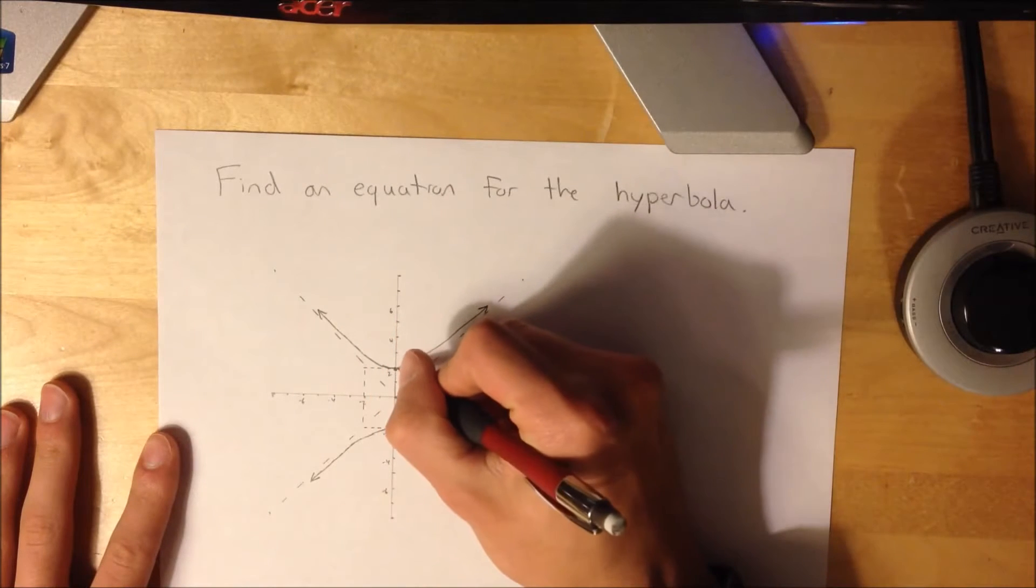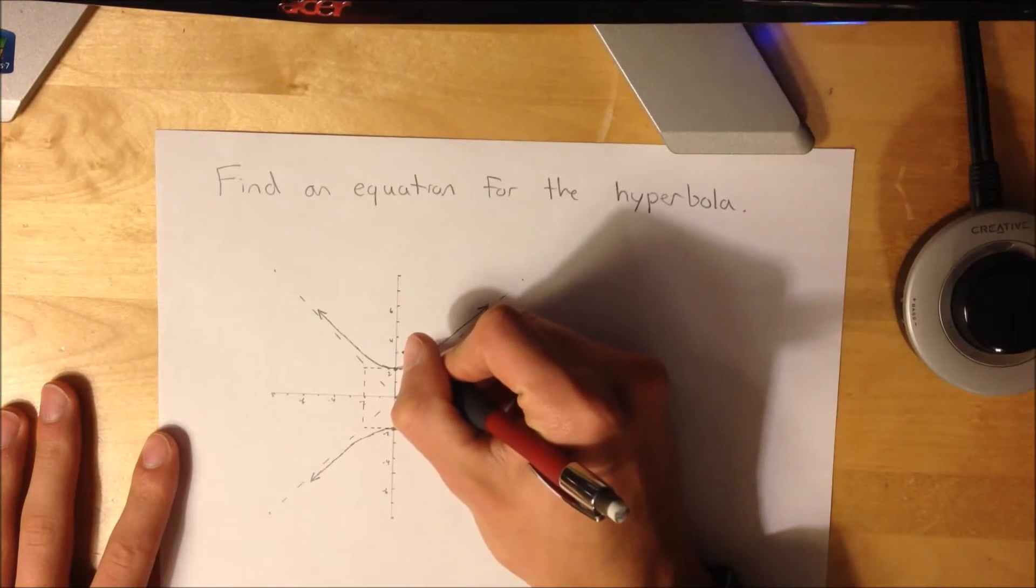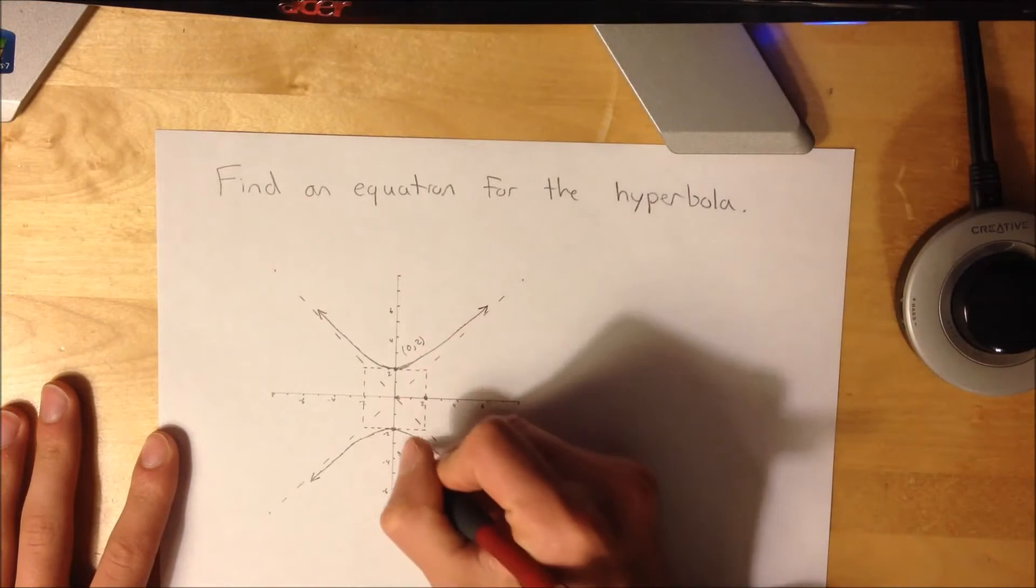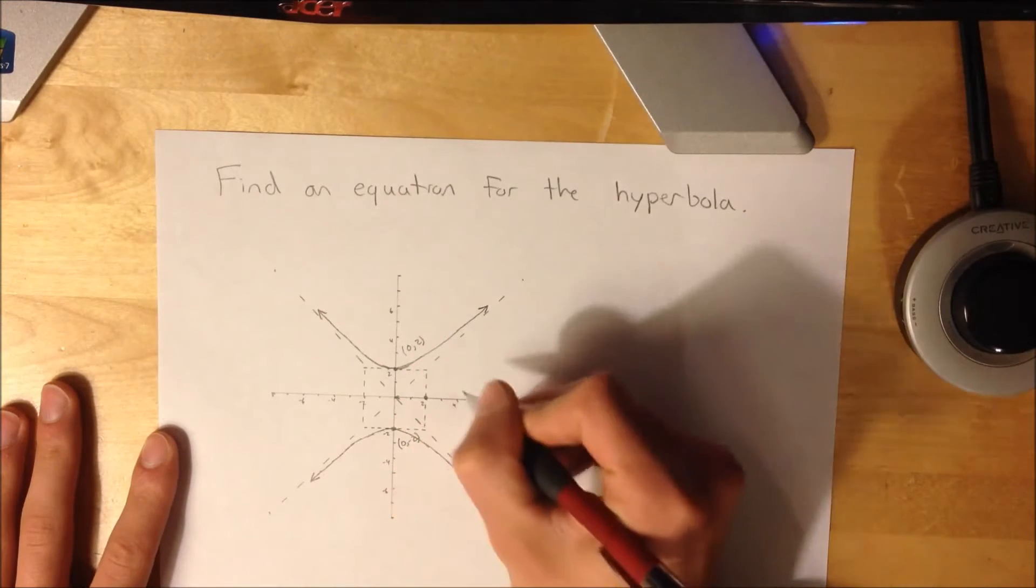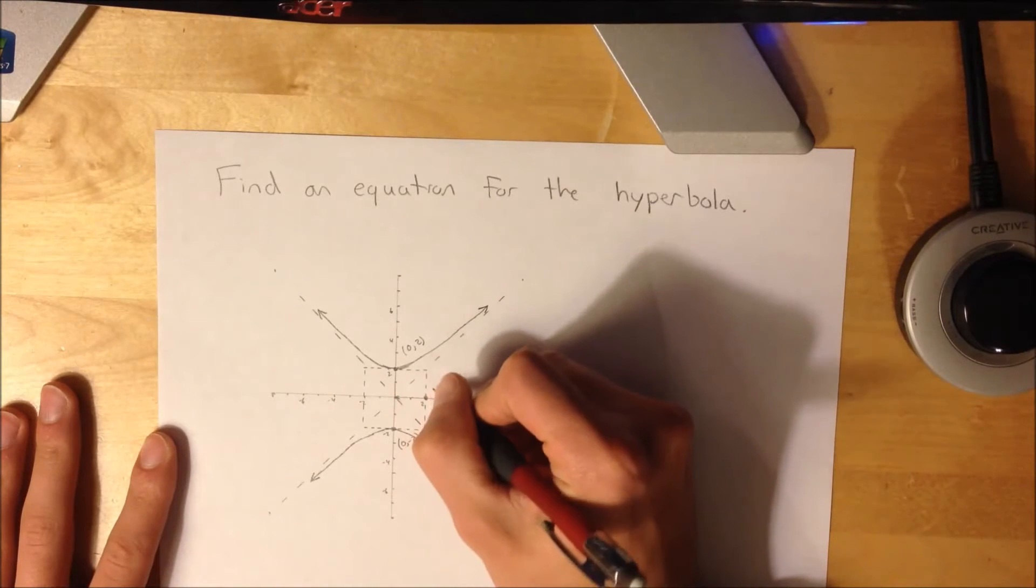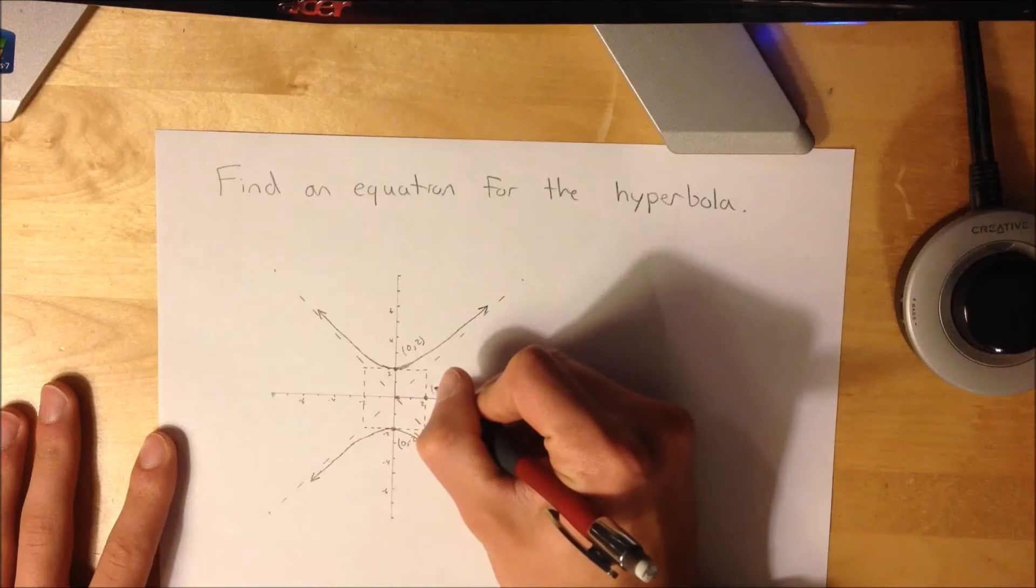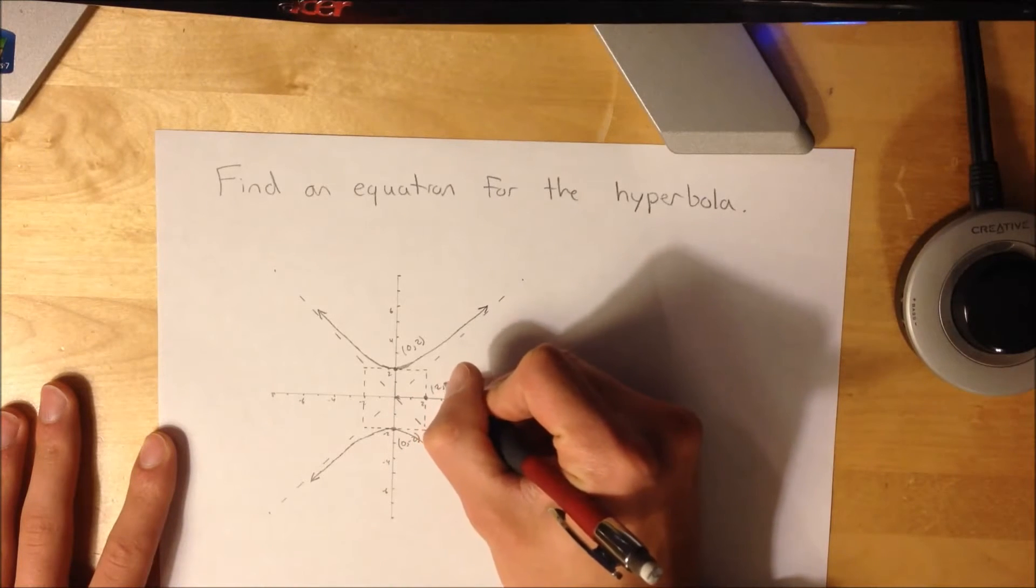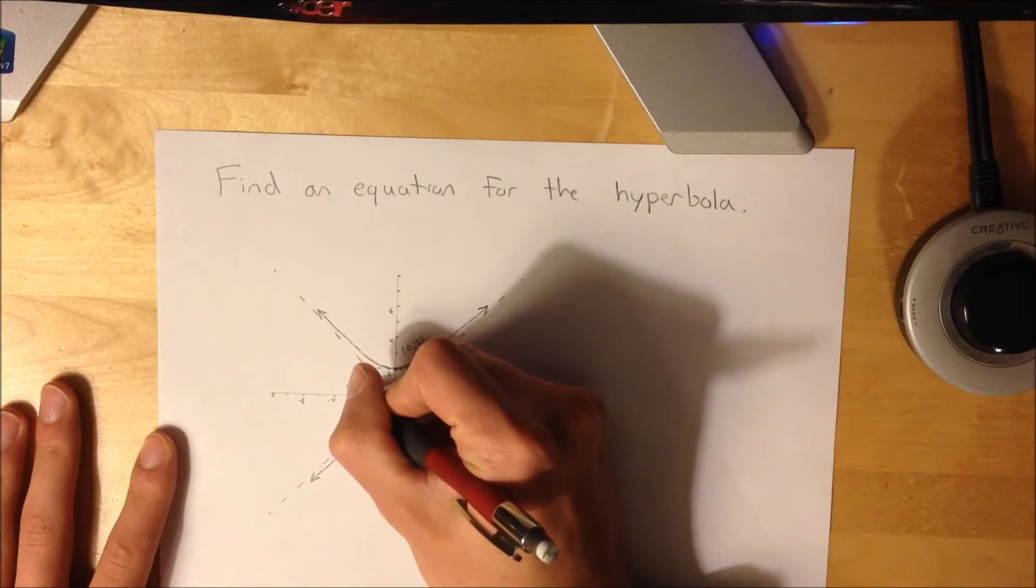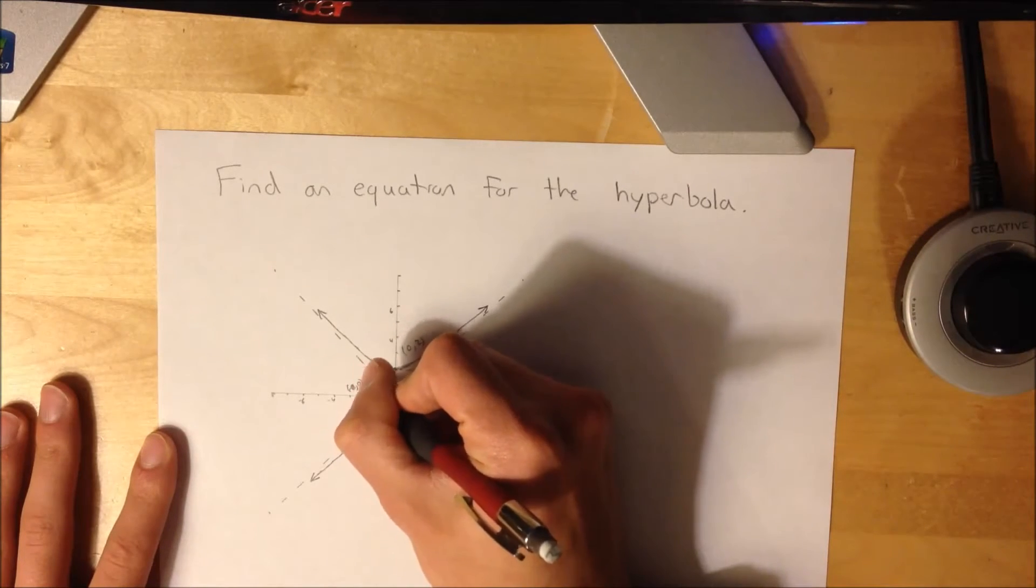There's a vertex right here at (0,2), another one down here at (0,-2), and then you have this point right here which is part of finding the asymptote, which is (2,0), and then you have (-2,0).